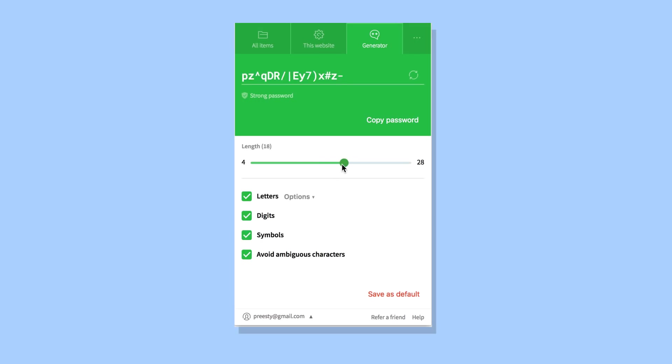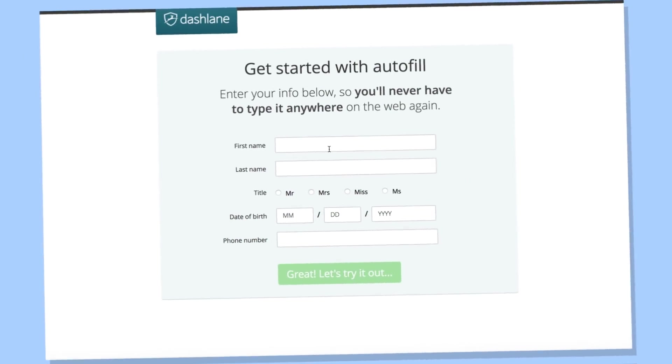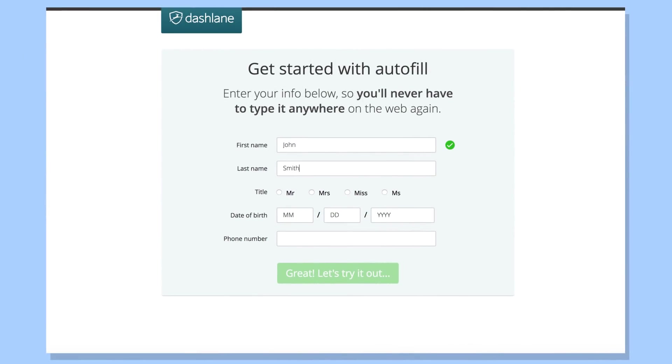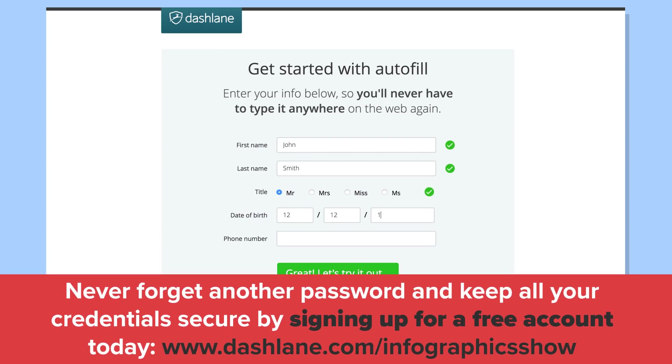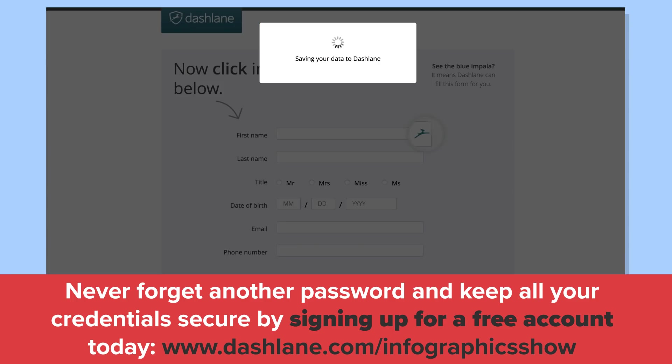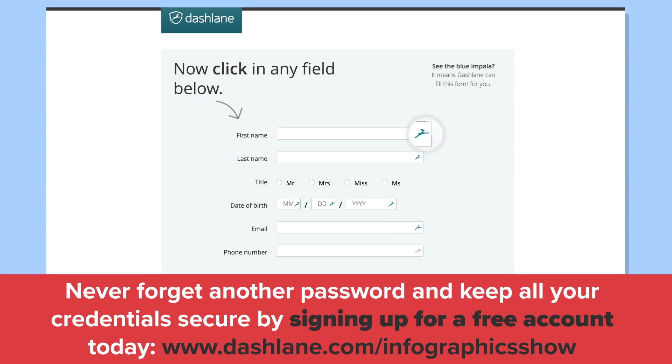Dashlane is available for PCs, Macs, iOS and Android devices, and if you use Dashlane Premium, you can sync your passwords and secure login details across all your devices. Become more secure and support the Infographics Show at the same time by using the code Infographics, and get 10% off Dashlane Premium from the get-go by going to dashlane.com/infographicsshow or by clicking the link in the description.